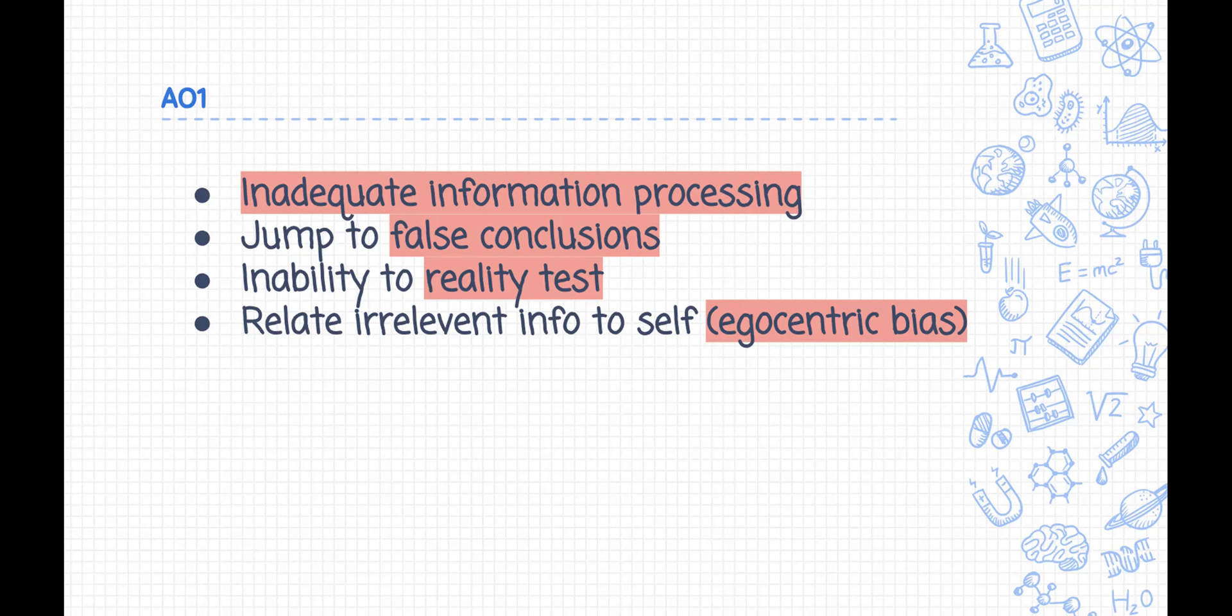Hallucinations come from cognitive deficits. There is evidence that people diagnosed as schizophrenic have difficulties in processing various types of information, for example, visual and auditory information.